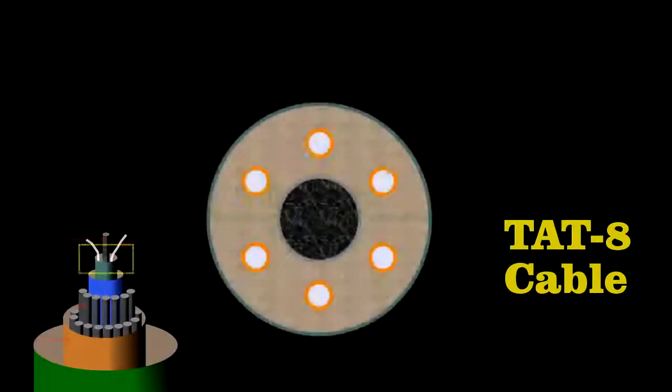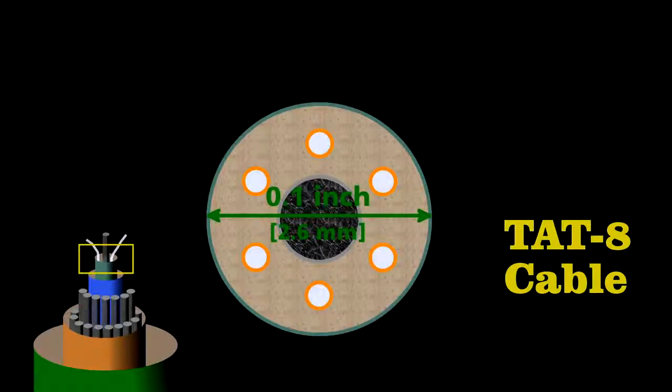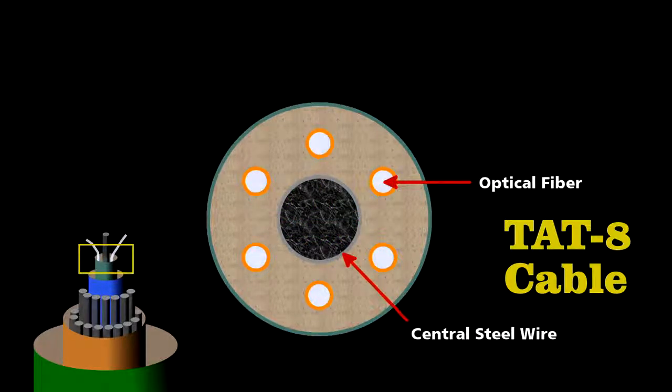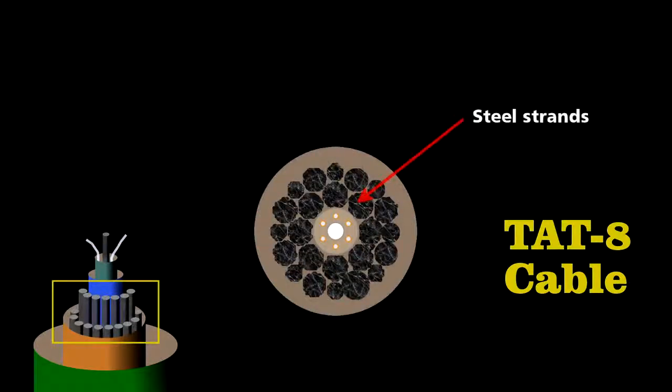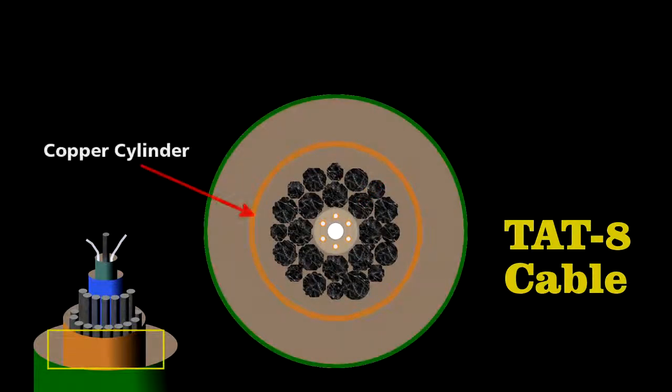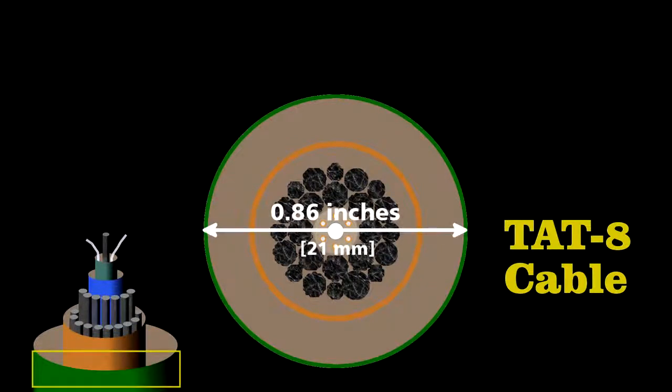Engineers designed the cable carefully to survive on the ocean floor. At its center lies the core. Less than a tenth of an inch in diameter, it contains six optical fibers wrapped around a central steel wire. They embedded this in an elastomer to cushion the fibers, surround it with steel strands, and then sealed it inside a copper cylinder to protect it from water. The final cable was less than an inch in diameter, yet it could handle some 40,000 simultaneous phone calls.